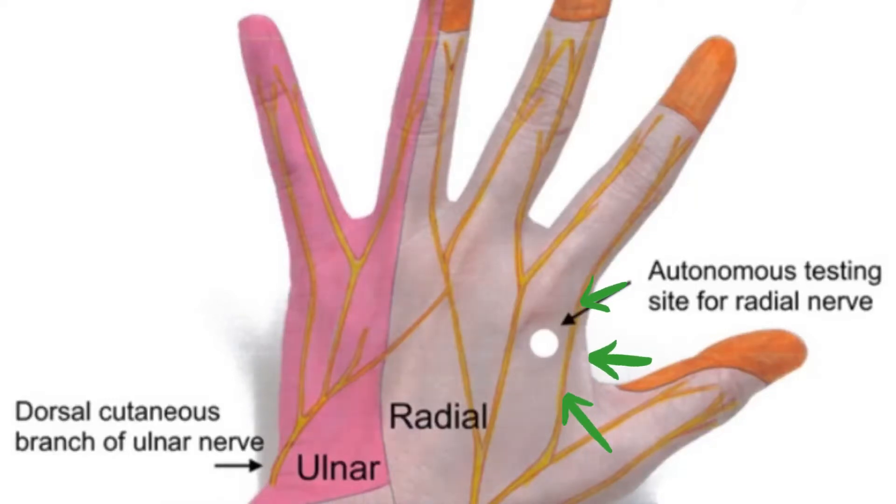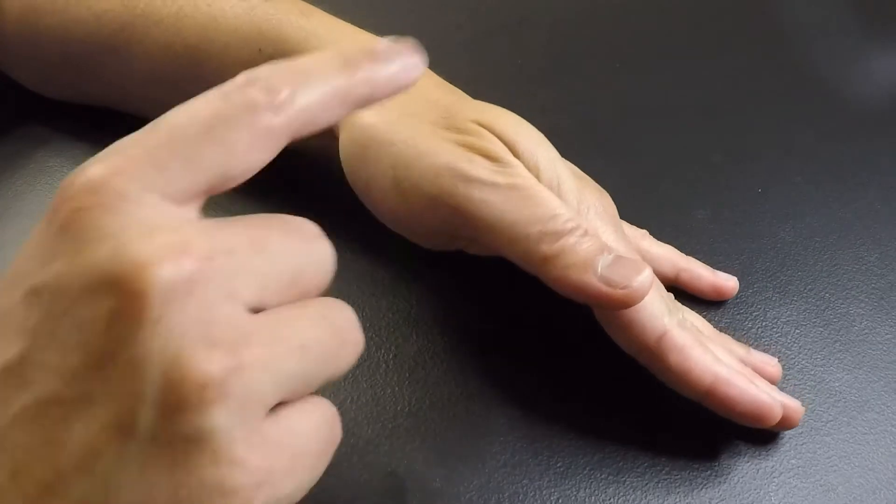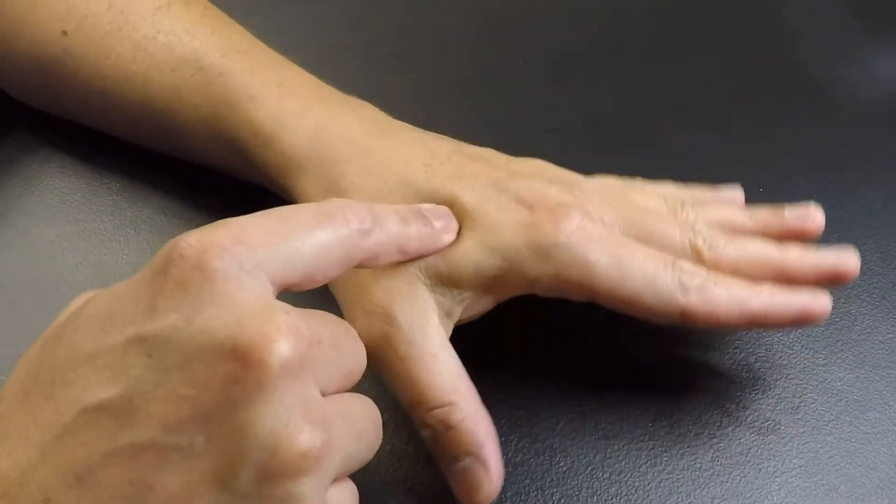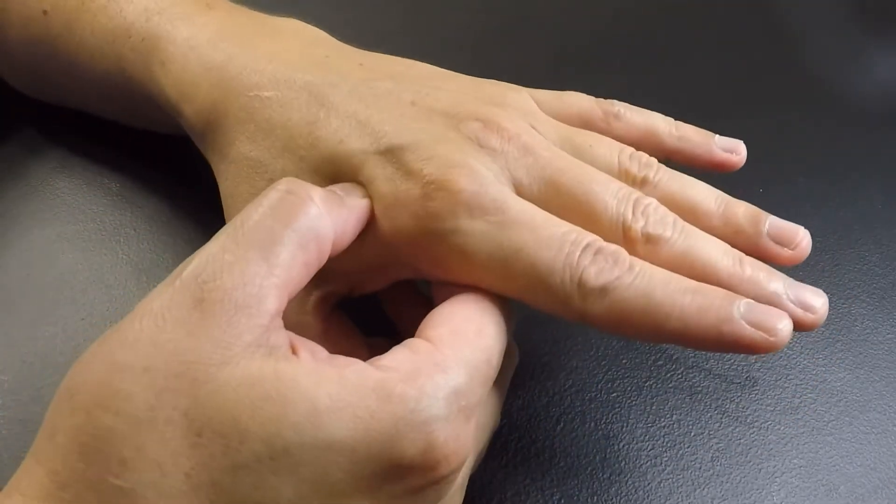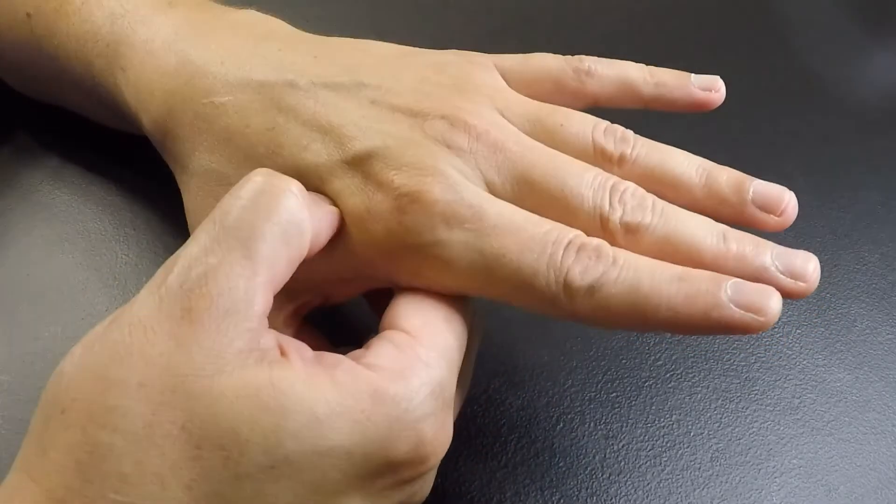One way we find Large Intestine 4 is this highest point on the mound of the muscle here. And when we press down there will be a depression between the muscle and the bone.